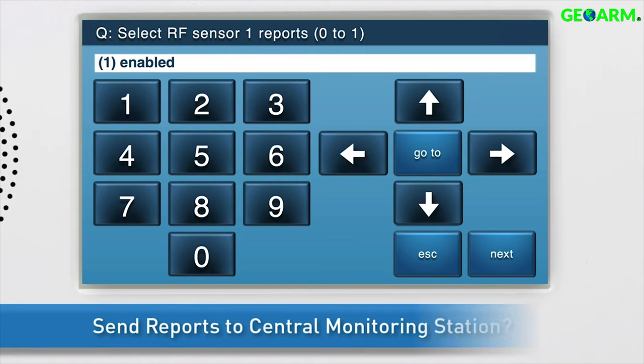Next, choose whether or not to send reports to the central monitoring station. If you would like reports related to the thin door window contact to be sent to the central monitoring station, select 1 enabled. Press the down arrow to go to the next sub-question.